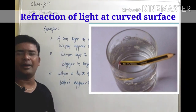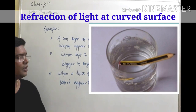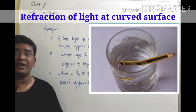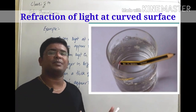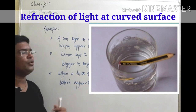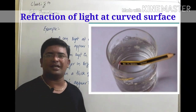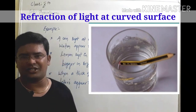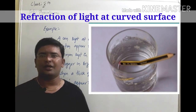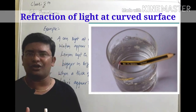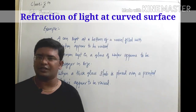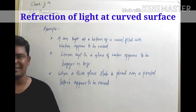But actually the pencil doesn't bend — it only appears to be in a bent position. The reason for all these observations is refraction. So today's phenomenon we are going to study is refraction of light on curved surfaces, which is Chapter 4 in Class 10.